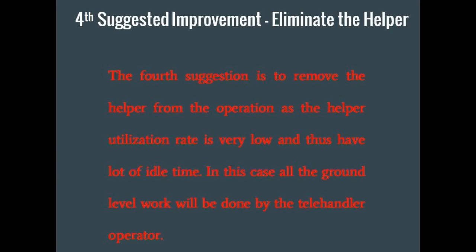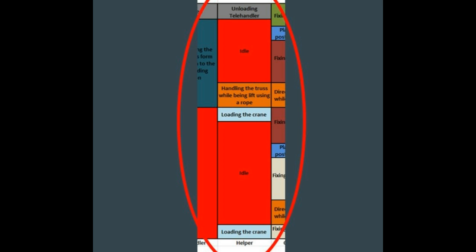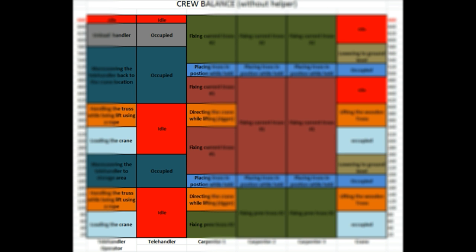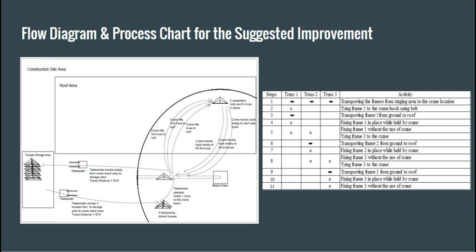The fourth and final suggestion is to eliminate the helper. Doing so will decrease the idle time of the telehandler operator. After careful analysis, it was determined that the helper and the telehandler operator are idle for most of the time. The helper only assists the telehandler operator in tying the wooden frames onto the crane hook — operations that can be easily done by the telehandler operator. Eliminating the helper and assigning the work to the telehandler operator will decrease idle time, but the telehandler operator needs to transport three frames at a time instead of two to maintain the same time for the whole activity. The process chart in the flow diagram for this improvement is as shown.